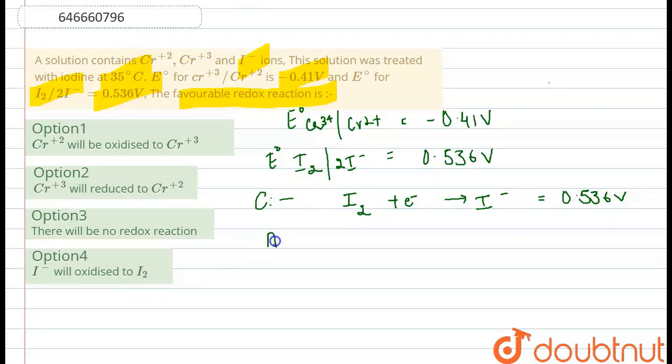The reaction at anode is where the oxidation is taking place. Chromium 2 plus is getting converted into chromium 3 plus plus electron, and its E naught value is minus 0.41.